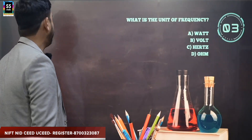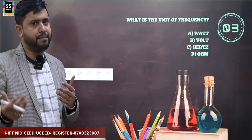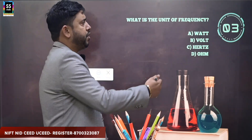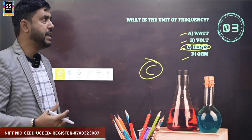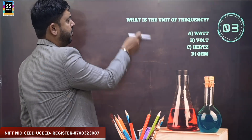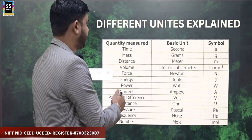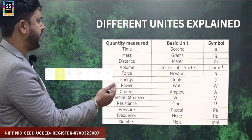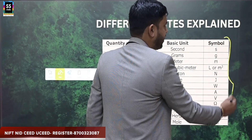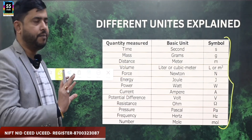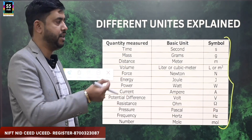The next question is: what is the unit of frequency? The options are volt, hertz, and ohm. The correct answer is hertz. You need to memorize the different units of different parameters. For example: time is second, mass is gram, distance is meter, volume is L or m³, force is newton, energy is joule, power is watt, current is ampere, potential difference is volt, resistance is ohm, pressure is pascal, frequency is hertz, and amount of substance is mole.